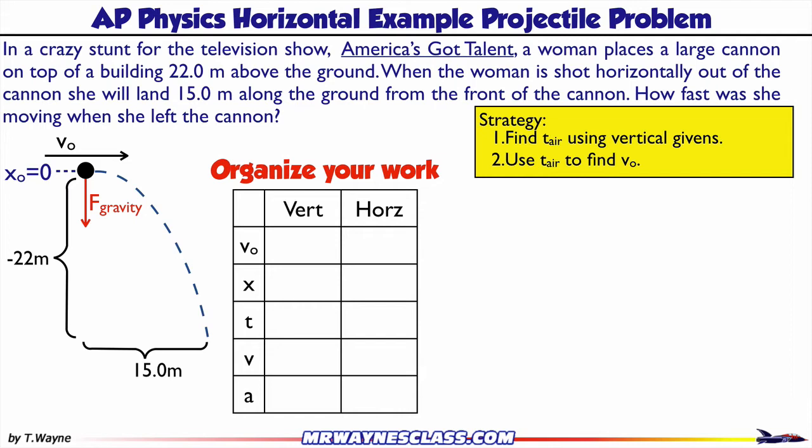So here's my list of givens or what I'm looking for. It's shot horizontally, which means it's not going up and down when she leaves the cannon, so vertically there's no initial velocity. It's all horizontal. Also horizontally there's no acceleration because I only have the force of gravity going vertically, so I'm going to put a zero down there for acceleration horizontally. Horizontally I don't know the initial velocity and that's what I'm looking for. Vertically I know that she drops 22 meters, so that's negative 22 meters, and I also know that they're going to move horizontally 15 meters. There's my 15 meters.